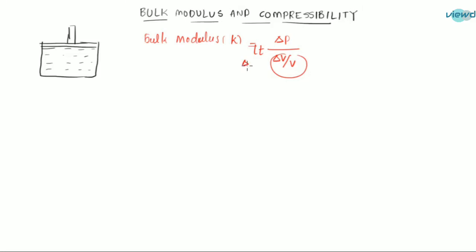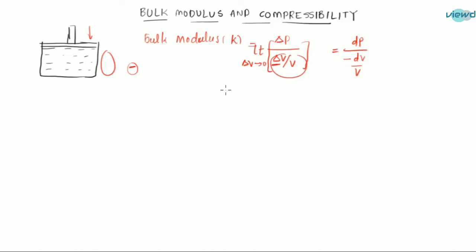So taking the limit, we get dP divided by minus dV by V. Since with the increase of pressure there will be a decrease in volume, as the volume decreases a negative value will appear. To convert it into a positive value we apply a minus sign. So bulk modulus K is equal to dP divided by minus dV by V.